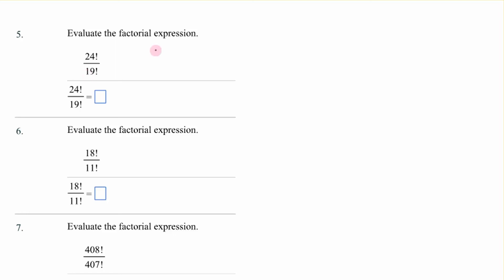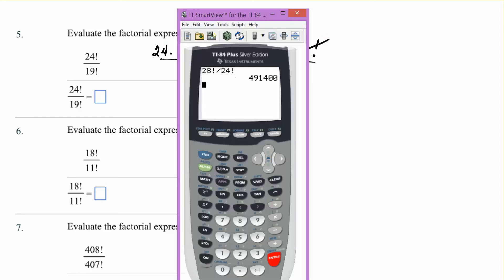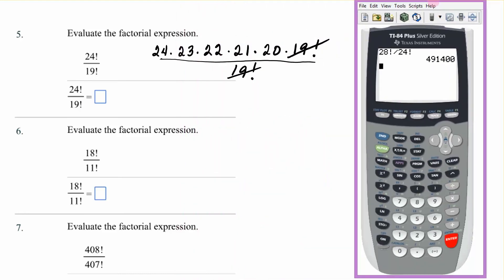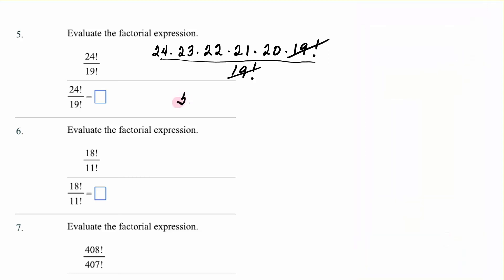Several ways you could do them. The first one, you could say that's 24 times 23 times 22 times 21 times 20 times 19 factorial. And I stopped there because it's on the bottom. And it's over 19 factorial. Those cancel out. So I will simply multiply these numbers. So 24 times 23 times 22 times 21 times 20, and that gives me 5,100,480.